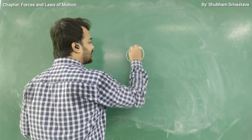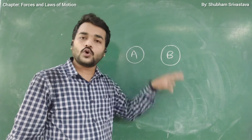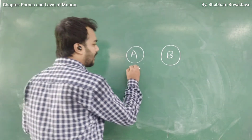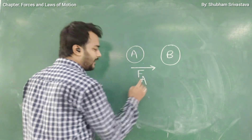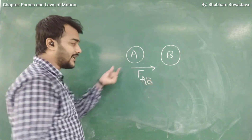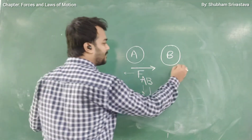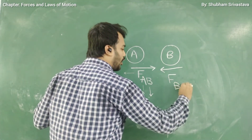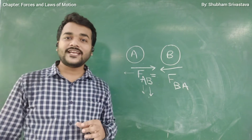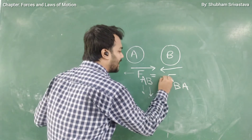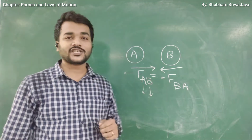Let's take a formal example. If body A and body B collide against each other, a force will be applied by body A on body B — denoted as F_AB. At the same time, there will be a force applied by body B on body A — denoted as F_BA. These forces are equal in magnitude but opposite in direction, which is indicated by the minus sign: F_AB = −F_BA.